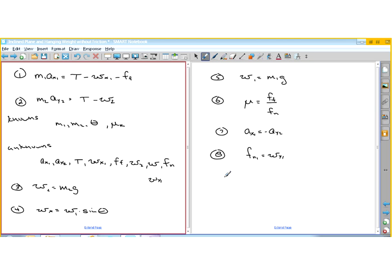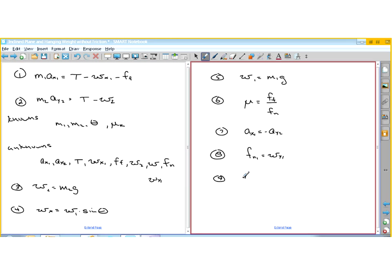So let's do the acceleration one. A sub X1 is equal to negative A sub Y2. So my last equation is from the sum of the forces in the Y direction, which said that the normal force is equal to W sub Y1. Okay, I've got another unknown, W sub Y1. But W sub Y1, because Y1, I'm not sure which way I did it, W sub Y1 is equal to W1 times the cosine of theta. I know theta, I know W1. So now I have everything I need.